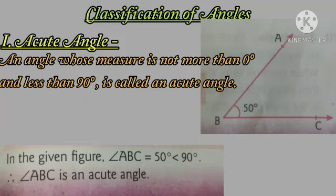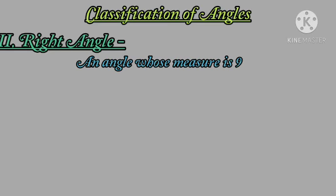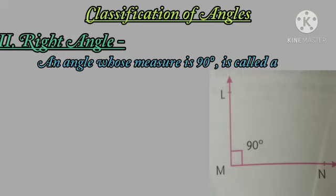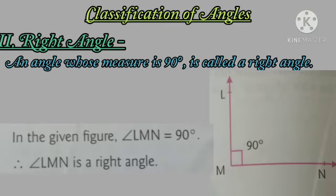Now next, right angle. An angle whose measure is 90 degrees is called a right angle. You can see the figure. Angle LMN is 90 degrees, so angle LMN is a right angle.